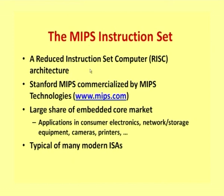Welcome back after the break. We were looking at how to encode an instruction — we talked about the complex instruction computer where encoding is more complex, and the reduced instruction computer where we use simple encoding mechanisms. An example of a RISC architecture we will look at now is based on the MIPS architecture. The MIPS processor is a very good example of a Reduced Instruction Set Computer. It was initially proposed at Stanford University, commercialized later by MIPS Technologies, and is used in consumer electronics, network storage equipment, cameras, printers, and so on.